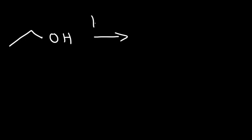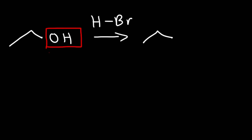In this video we're going to go over reactions associated with alcohols. If we react an alcohol with hydrobromic acid, the OH group will be replaced with a bromine atom. The alcohol is converted into an alkyl halide.